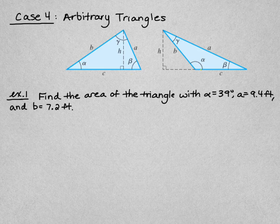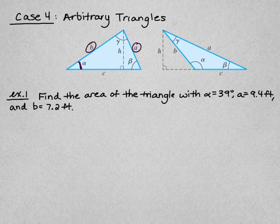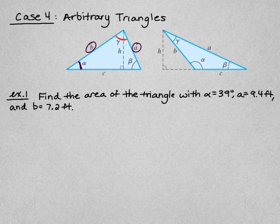Here's Example 1: find the area of the triangle given alpha equals 39°, a equals 9.4, and b equals 7.2. We have two sides, which suggests we should use the area formula with two sides and an included angle. However, the included angle between a and b is gamma, not alpha, so we need to solve for gamma.